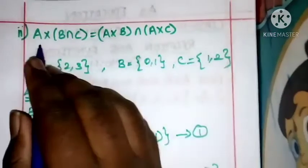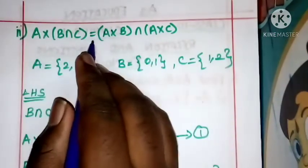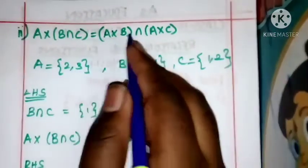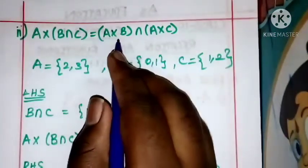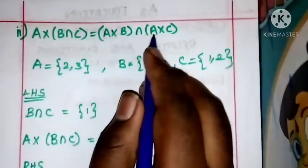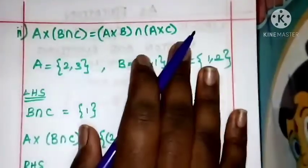The second subdivision: A cross B intersection C is equal to A cross B intersection A cross C. This is a property of Cartesian products.